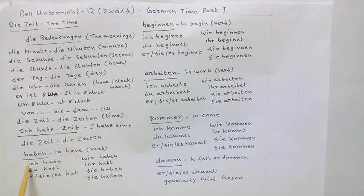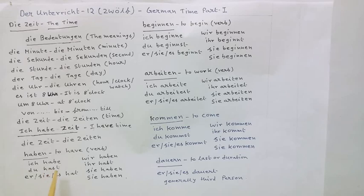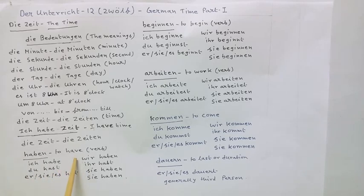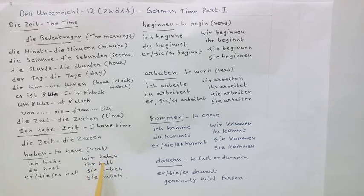Haben — to have. Ich habe — I have. Du hast — you have, informal. Er, sie, es hat — he, she, it has. Wir haben — we have. Ihr habt — you all have, informal. Sie haben — they have. Sie haben — you have, formal.